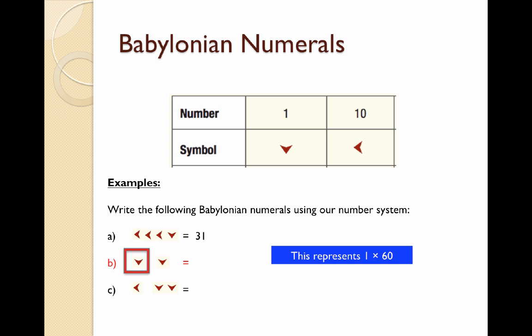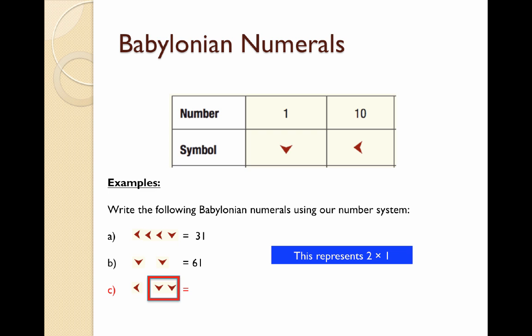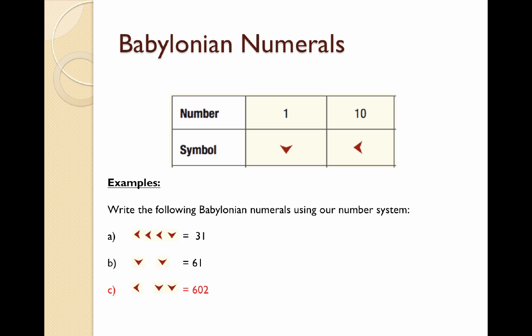For question B we notice that the symbols are separate. The first down arrow represents 60 and the second arrow represents 1. Because they're separated they mean 61. For question C the symbols are also separate. There's a 10 in the 60s column — that represents 10 lots of 60, which is 600. The two ones represent 2. So when we put that together we get the number 602.